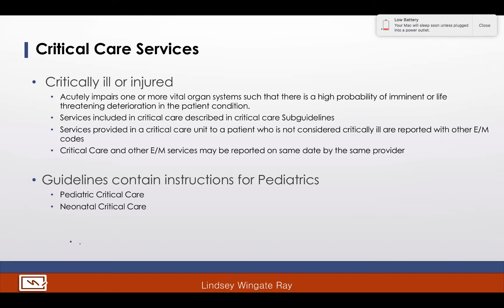Critical care services are provided to patients in the hospital who are critically ill or injured. Services must meet the criteria of a critical illness or injury defined in the CPT critical care guidelines. The critical care guidelines define a critical illness or injury as one that acutely impairs one or more vital organ systems, such that there is a high probability of life-threatening deterioration in the patient's condition. Critical care is usually provided in a critical care area, but not always. Services provided to a patient who is in a critical care unit but not considered critically ill would be reported using another E&M code. The same physician can bill critical care and other E&M services on the same date.